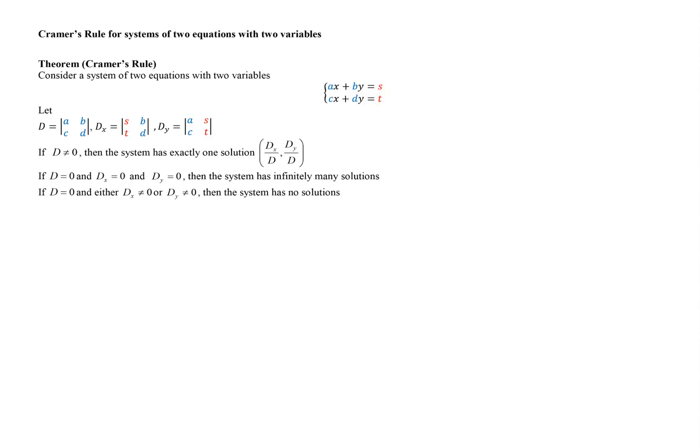The theorem says that if the main determinant D is not zero, then the system has exactly one solution of the form X = D_X/D and Y = D_Y/D. These are the X and Y values that solve the system.